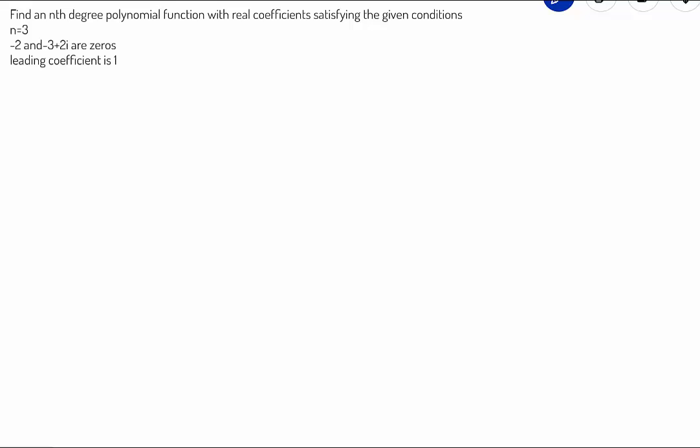We are going to be finding an nth degree polynomial function that has a degree of 3, and we are told that it has -2 and -3+2i as zeros. Now, it's a third degree function, so it's going to be a cubic function to the third power. We are given that -2 and -3+2i are 2 out of 3 of the zeros.